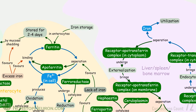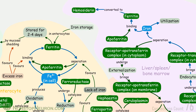Iron in the cell is utilized for various metabolic needs. Excess iron binds with apoferritin to form ferritin. Some of the ferritin gets converted to hemosiderin. This ferritin and hemosiderin represents iron storage in the liver, spleen, and bone marrow.